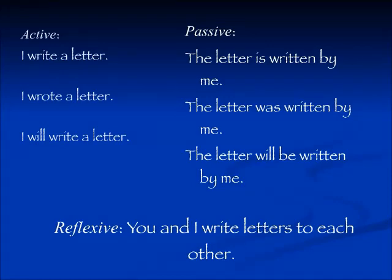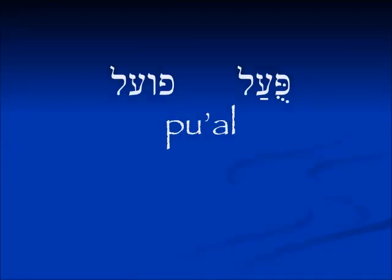And then we have the reflexive, which we will get to another time. We will start with the pu'al, which is variously spelled in a few different ways. The pu'al usually corresponds to the pi'el form — the pu'al is usually the passive of the pi'el form, but not always.